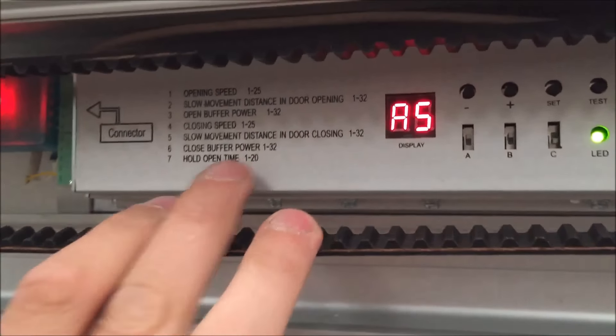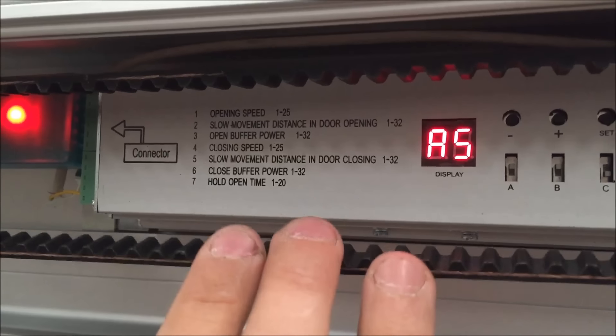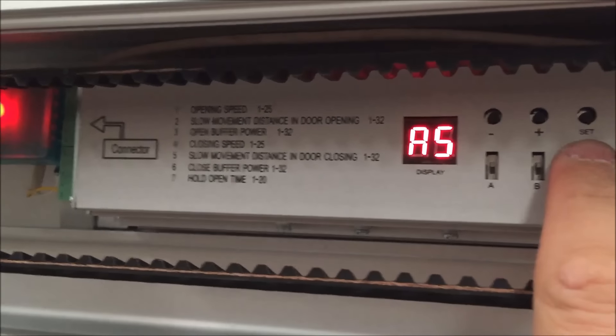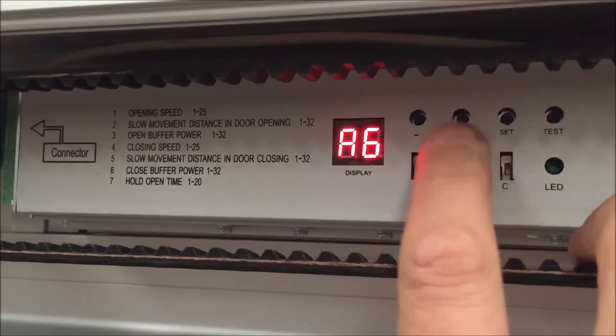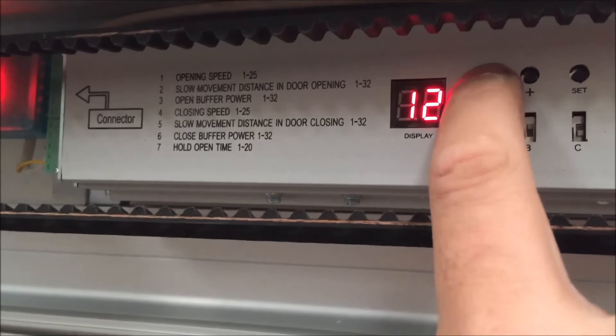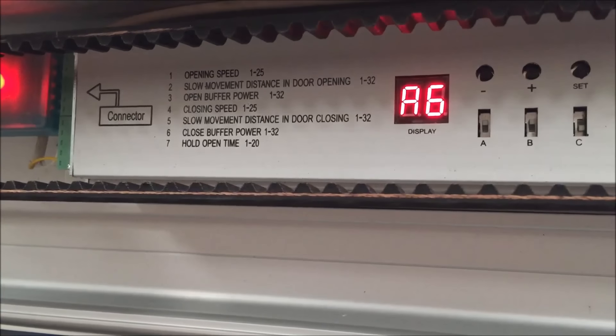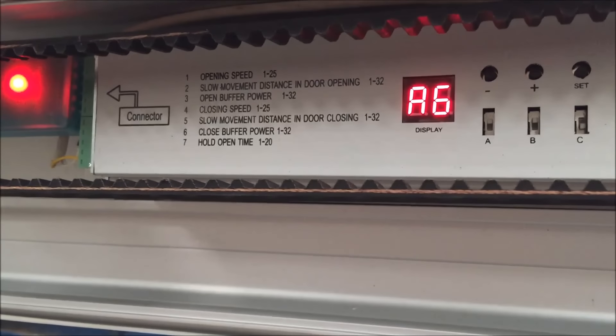Para la intensidad del cierre, cuando la puerta está cerrando, también para el anti-aplastamiento, nos vamos al menú 6 y seleccionaremos también el valor más bajo posible para que la puerta abra en cuanto que vea algún obstáculo.